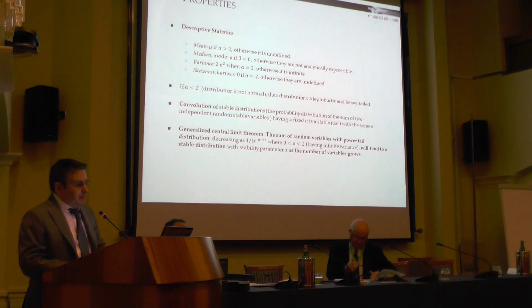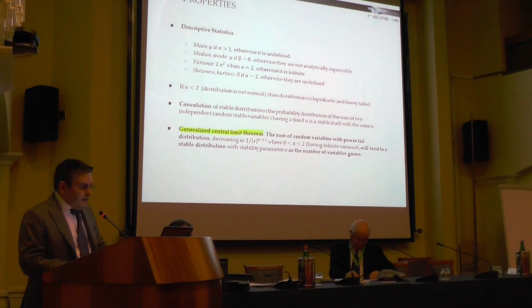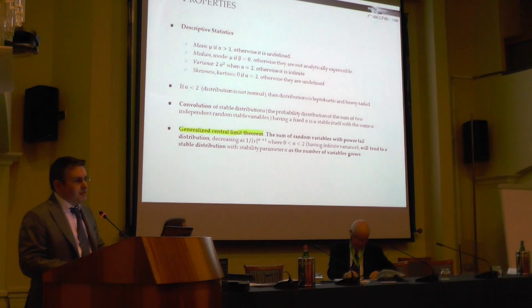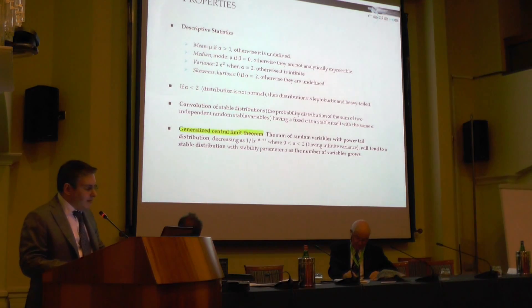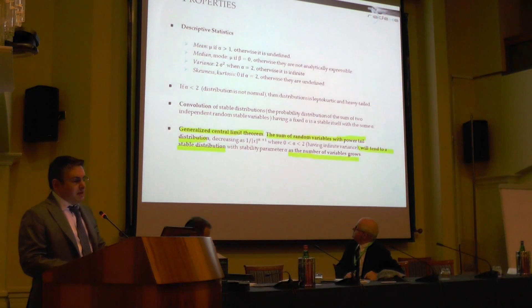I'll summarize some important properties, but we are short on time, so let's focus on the most important one: the generalized central limit theorem. We consider it a strong theoretical basis for our distribution model. Basically, it states that the sum of random variables with power-law tail distributions will tend to a stable distribution as the number of variables grows — quite powerful, analogous to the classical central limit theorem in physics and engineering.